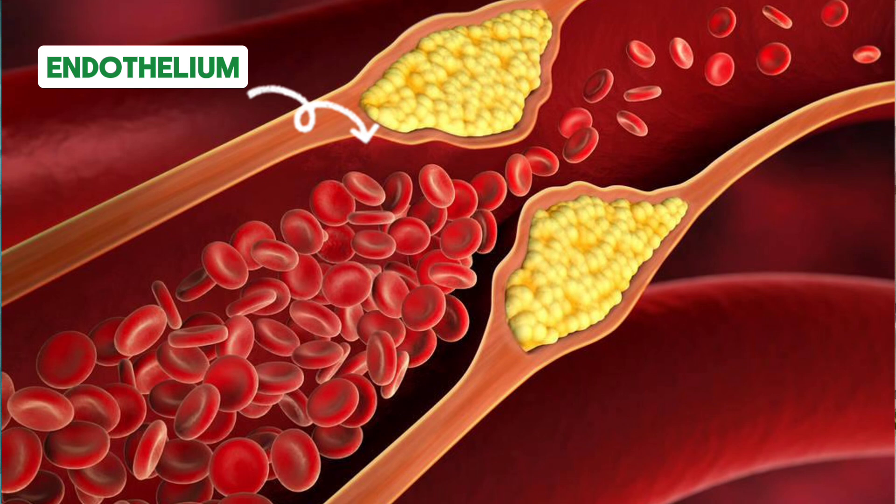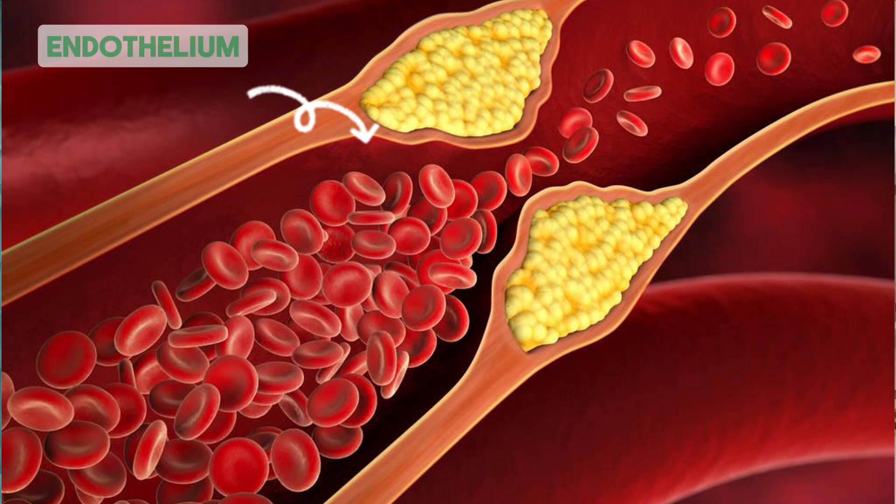LDL are of two types. Large, buoyant LDL, which is like a beach ball and simply floats along the blood vessel wall. Whereas small dense LDL, also called sdLDL, are smaller and able to penetrate the endothelium, which is the innermost layer of our blood vessels. There, it gets oxidized and is eaten up by white blood cells and forms arterial plaque. The key point is that you need to know how many small dense LDL particles you have, or their percentage relative to the total number of LDL particles. An advanced lipids test will give you the number of large and small particles and their reference ranges.